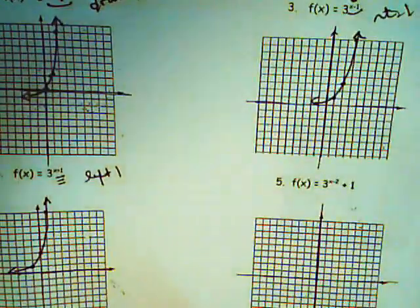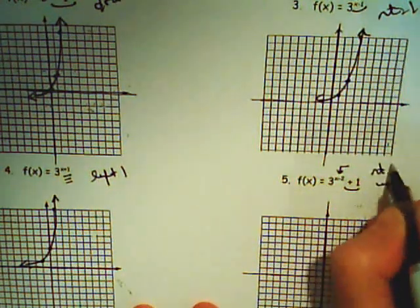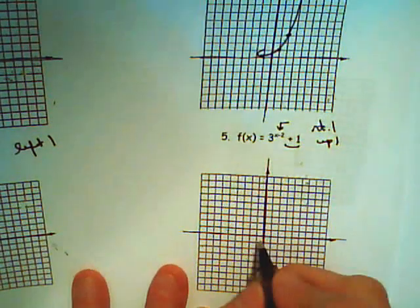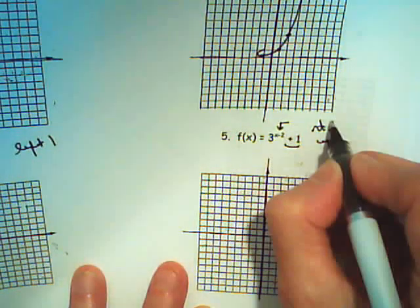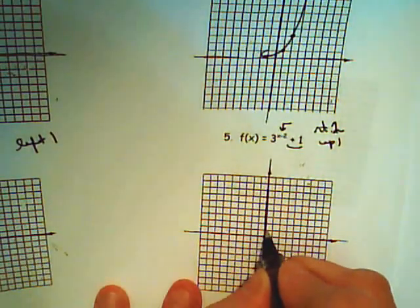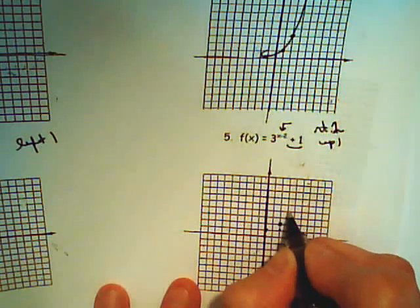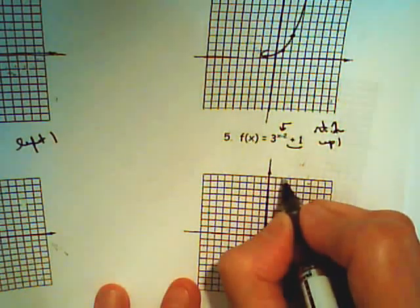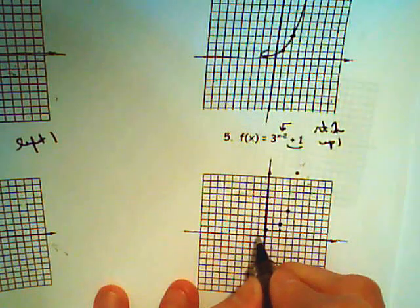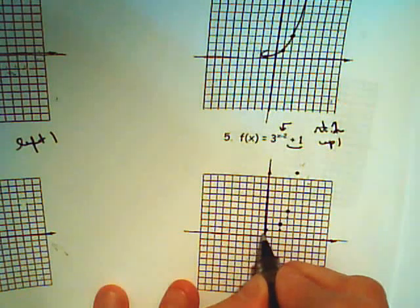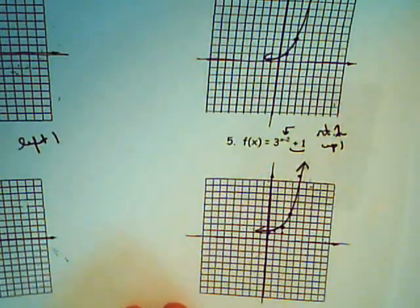In problem number 5, we have a double shift. The plus 1 on the end says shift up one. The x minus 2 says we're shifting right 2. So from (0, 1), I'm shifting right 2 and up 1. Point (1, 3) shifts right 2, up 1. Point (2, 9) shifts right 2, up 1. Point (−1, 1/3) shifts right 2 and up 1. The graph now takes on that appearance — same shape.